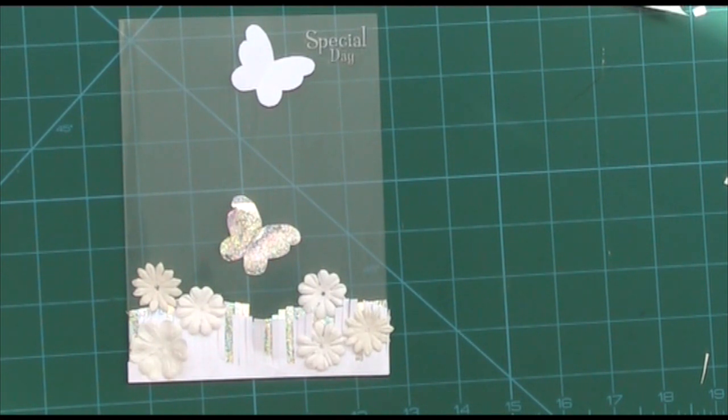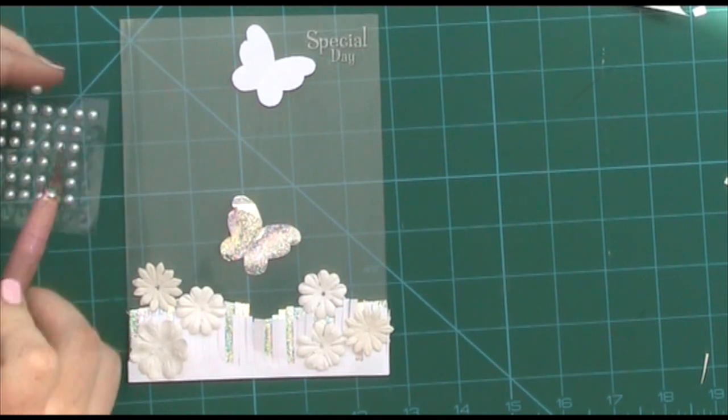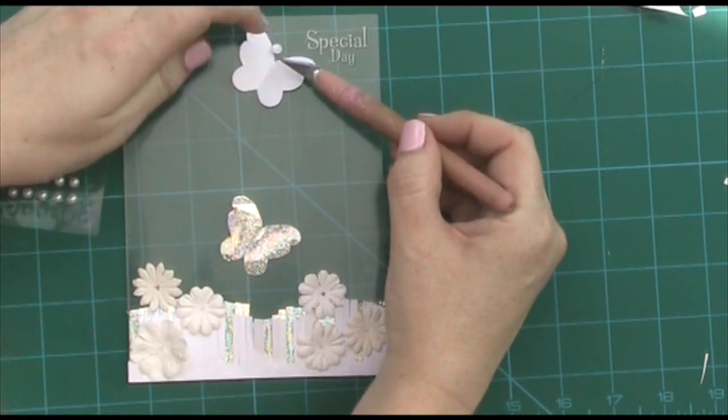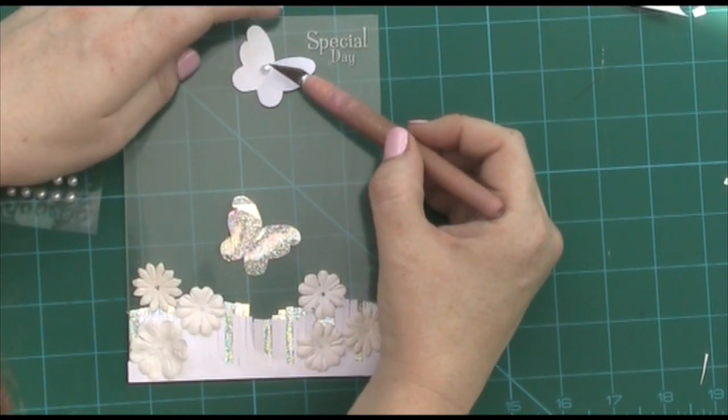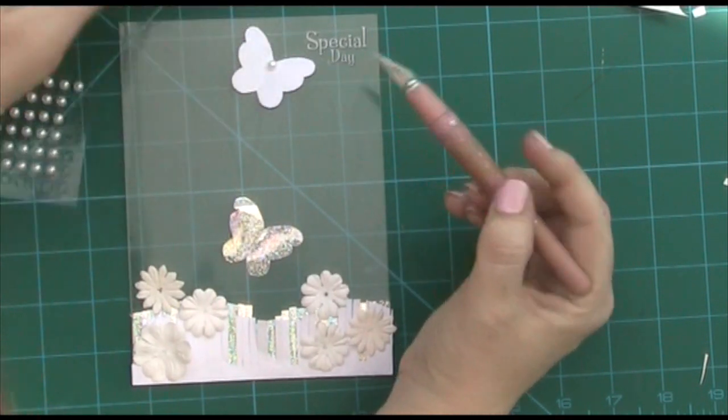So now I need to start with my pearls. I've got these self-adhesive pearls, I've got some bigger ones and these smaller ones. I'm going to use the bigger ones in the center of my little flowers and my butterflies just to create a bit of decoration. I'm literally just going to take my pearl onto the back of my craft knife here and then pop them into the center. The butterfly.